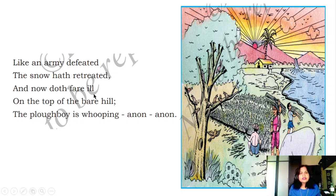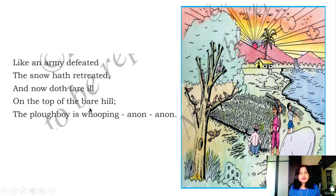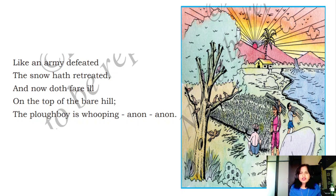Now doth fare ill — 'doth' means 'does', so everybody falls ill during the winter season. On the top of the bare hill — bare hill means no green or grass is there on the hill during winter. And the ploughboy is whooping and on and on — 'anon' means he is making a sound while working, he is ploughing.